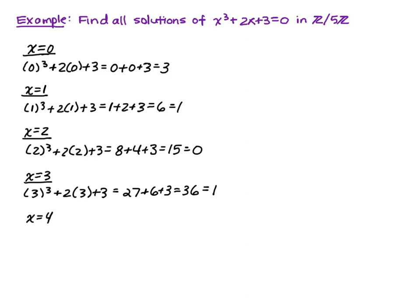So our last option here is x equals 4, and let's see what we get. So we do 4 cubed plus 2 times 4 plus 3. That will simplify to 75, which is congruent to 0 mod 5 if we look at the integers modulo 5.